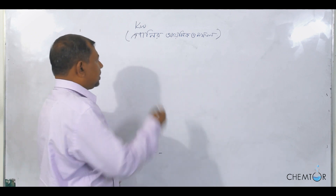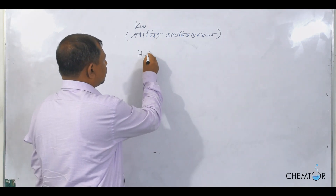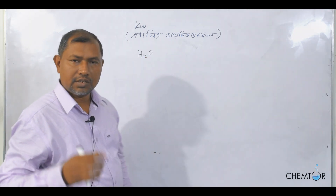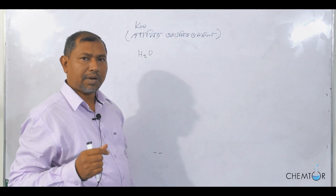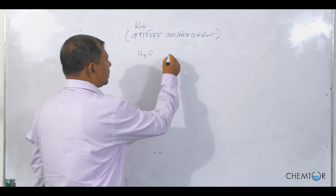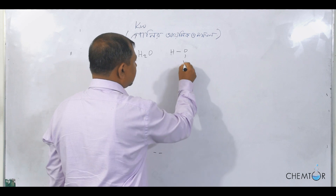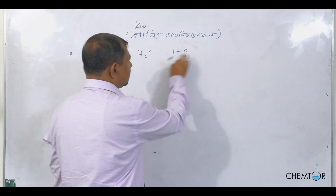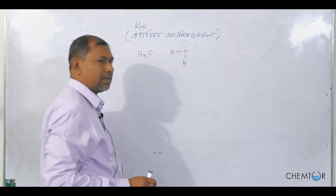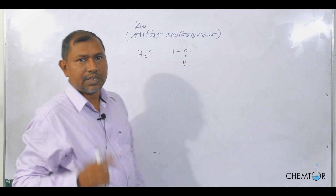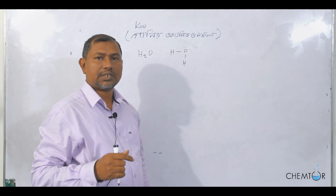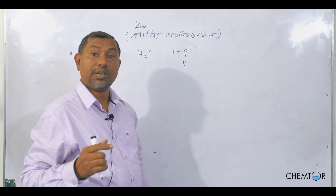We know that water is a universal solvent, and water consists of hydrogen and oxygen. But first, there is a KOLROCH and a Hay-Dweiler.